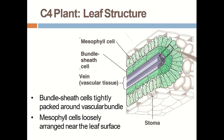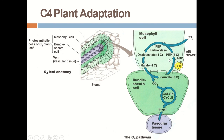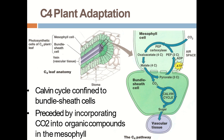The leaf structure of a C4 plant shows that bundle sheaths are tightly packed around the vascular bundle, and mesophyll cells are loosely arranged near the leaf surface. Here we see the mesophyll cells and the vascular tissues, with the bundle sheaths as a tightly packed structure. In the C4 plant, the cycle runs in two parts: the first part runs in the mesophyll and the second part runs in the bundle sheath.